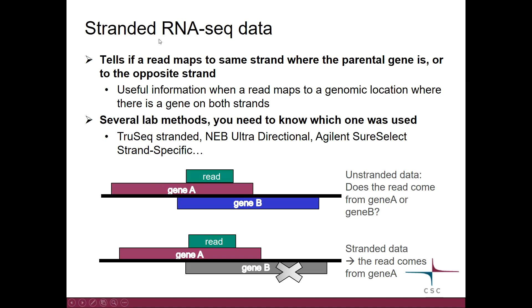Basically, what does strandedness mean? Well, if you have stranded data, you can figure out from which strand the parental gene is. This can be useful in situations like this: here we have a read which maps to a place in the genome where there are actually two genes — gene A on the forward strand and gene B on the reverse strand. If our reads were produced with an unstranded protocol, we wouldn't be able to tell if this read comes from a transcript of gene A or gene B. If we have stranded data, we can resolve this question. So always when possible, it is a good idea to have stranded data.